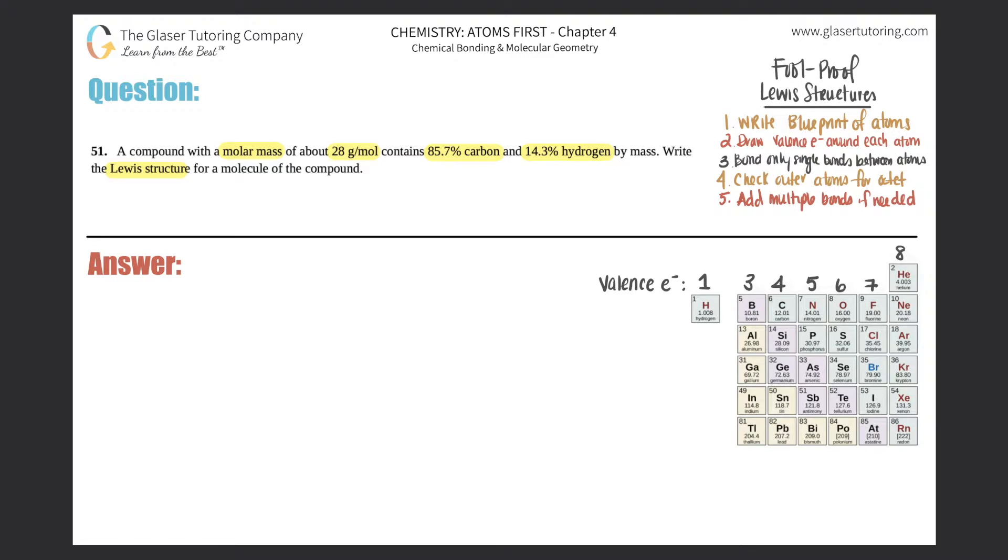As of right now for the Atoms First textbook, we did not do any math that had to do with percentages like as you see here, 85.7% carbon and 14.3% hydrogen. So it might be a little bit confusing, but like I say, have no fear, Christina is here! So I will show you how to do this one if you guys are a little bit confused.